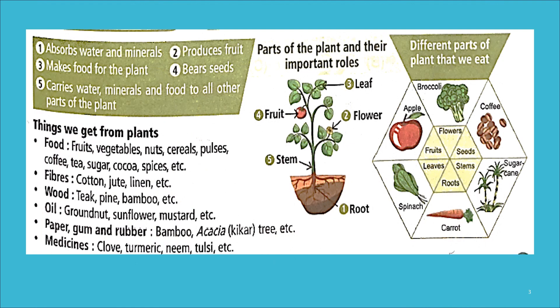These five are the main types of plants: trees, shrubs, herbs, creepers, and climbers. If you want to know more about the types of plants, there is a nice video on our channel — check the description for the link.